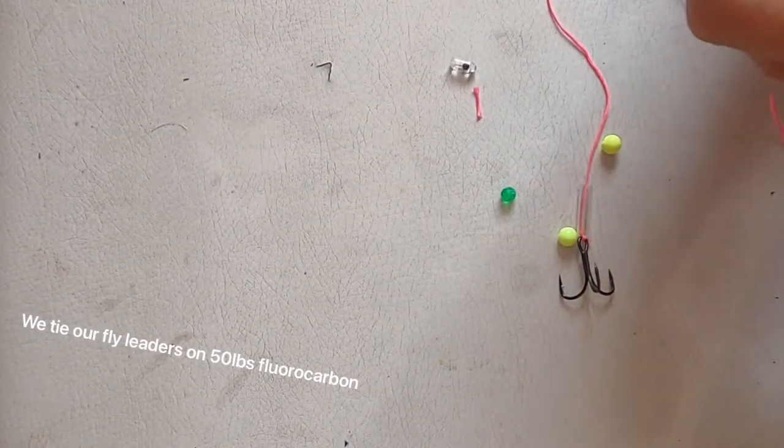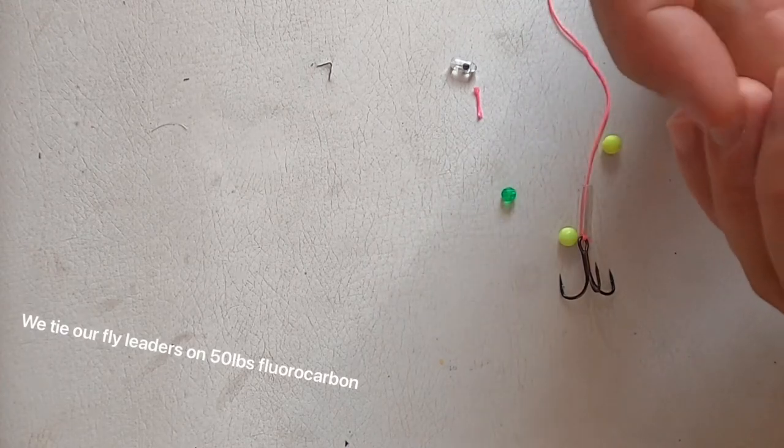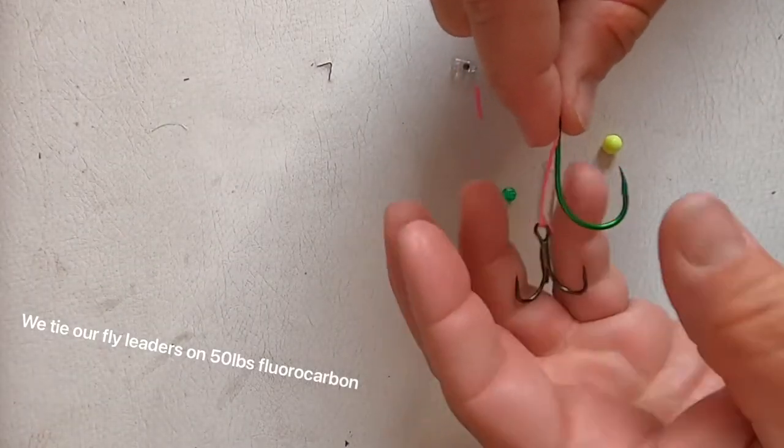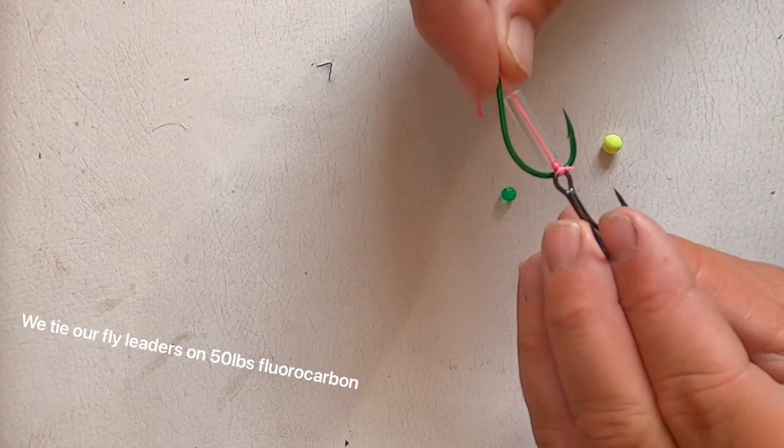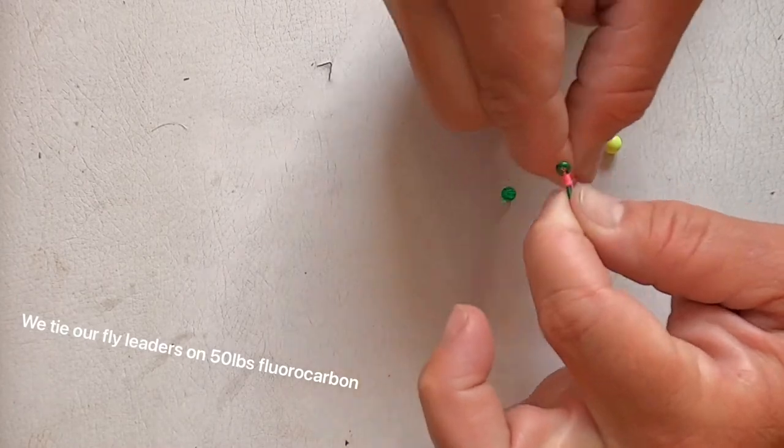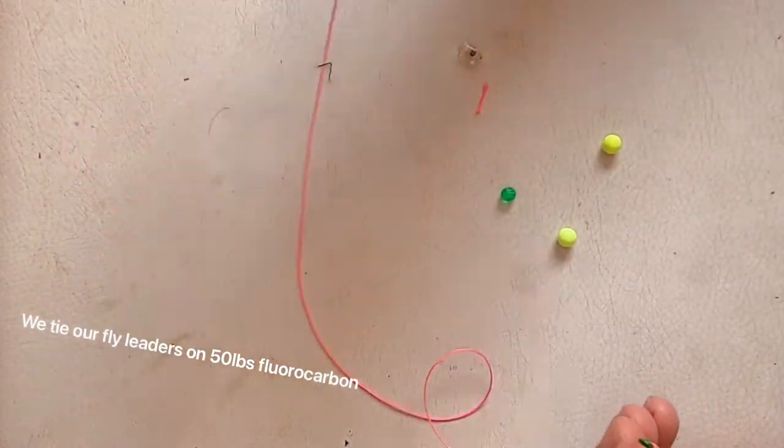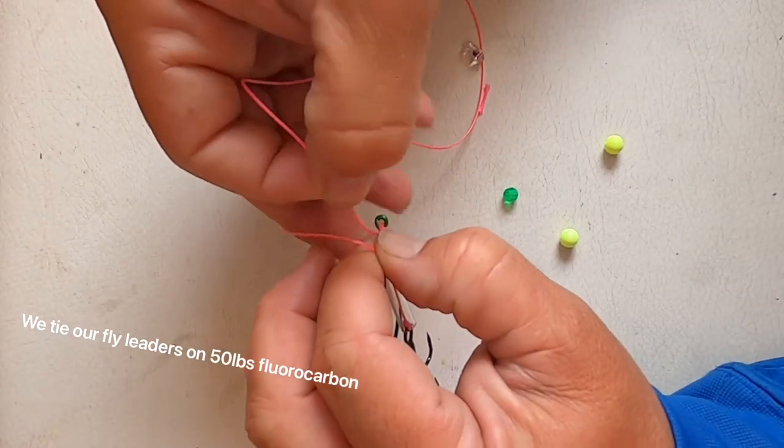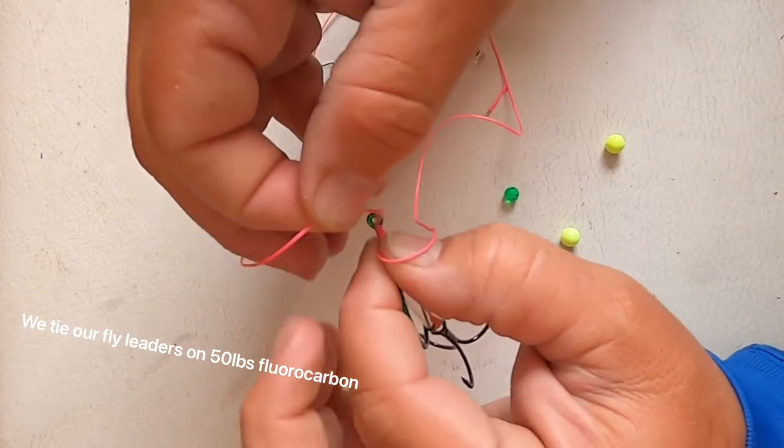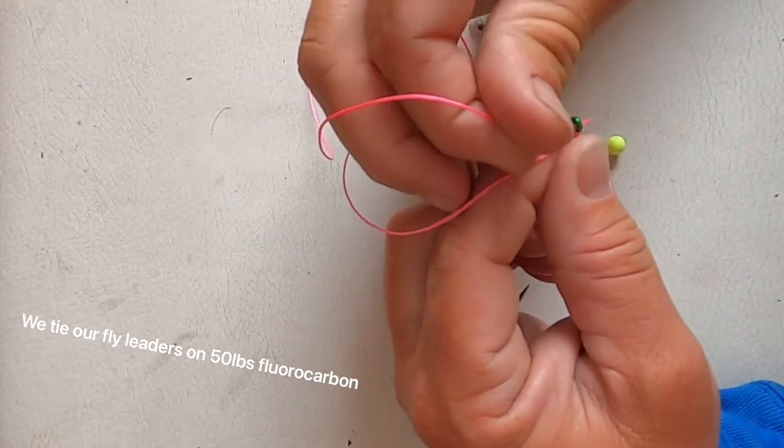I'm going to slide my single on. So what I like to do, get that treble, eye that treble right on the bend, that single hook. Now I'm going to take this line, wrap it around one, twice, three times, four times, five times. You're going to make a loop, this is why you need this end cut off. You're going to feed that back through that eye.